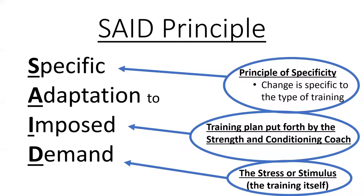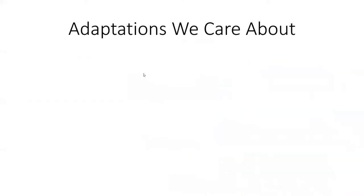When we get into our program design section, think back to this — those specific adaptations matter. So what are the adaptations that we care about as a strength and conditioning coach? The first one is skill — motor learning, understanding how to perform a movement pattern based on whatever the specific sport or training is.